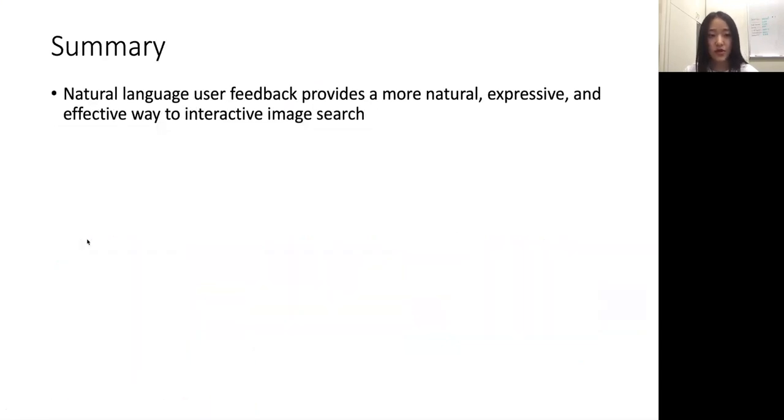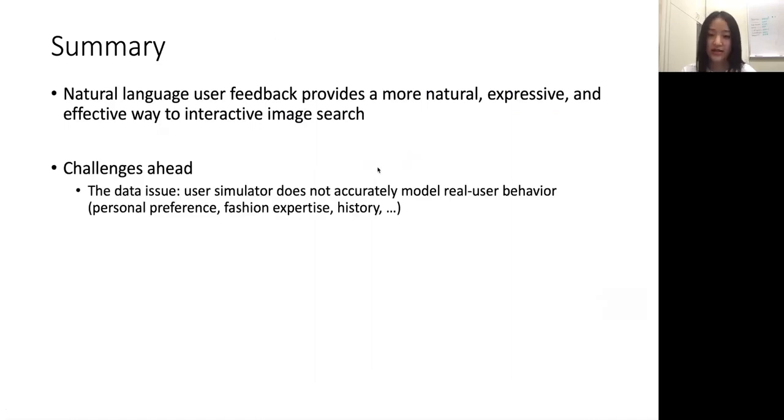In summary, for this work, we investigated natural language-based user feedback for interactive image retrieval, and showed evidence that this is indeed a more natural and effective way to perform image search. But from this experience, we also realized that this is a very challenging problem, and we're just scratching the surface to address this problem. There are quite a few directions we are very interested in working on right now to improve this work. The first one is the data issue. The user simulator provides a very low-cost way to train the model. However, user simulator itself is also a challenging problem. It makes mistakes, and also it doesn't take into account users' personal preference or vocabulary, fashion expertise. So one direction is how do we actually improve the performance of the user simulator.